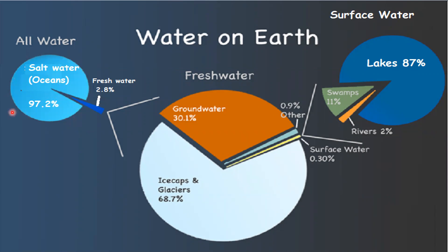Of the total water on Earth's surface, 97.2% is salt water found in oceans, and the balance 2.8% is fresh water. This fresh water exists as groundwater, accounting for 30.1%; ice caps and glaciers, constituting 68.7%; and only 0.9% in other forms. Surface water accounts for 0.30%, found in lakes, swamps, and rivers.